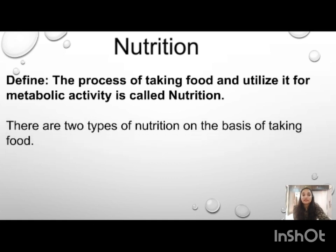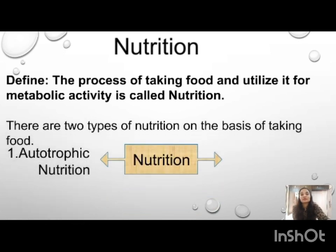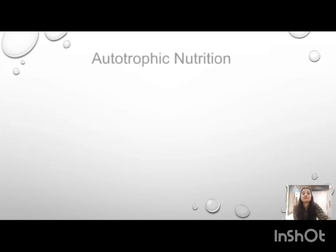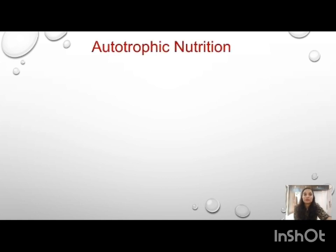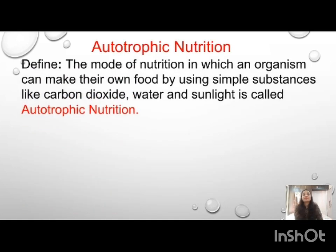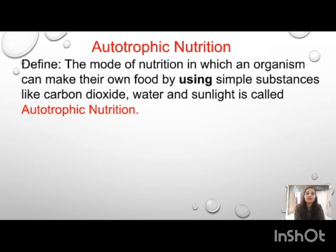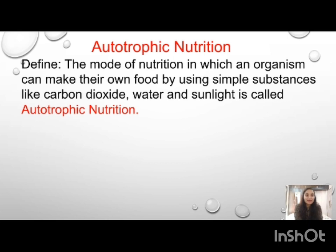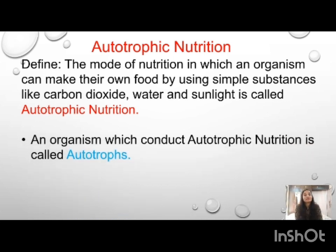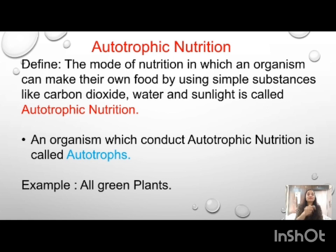On the basis of taking food, nutrition is divided into two parts: autotrophic nutrition and heterotrophic nutrition. The definition of autotrophic nutrition is: the mode of nutrition in which an organism can make its own food by using simple substances like carbon dioxide, water, and sunlight is called autotrophic nutrition. The organisms which conduct this type of nutrition are called autotrophs, and the example is all green plants.